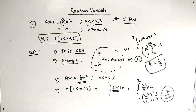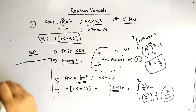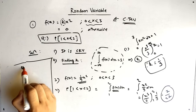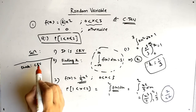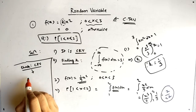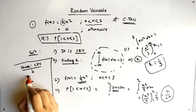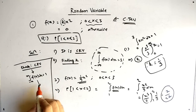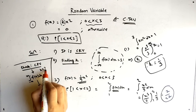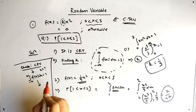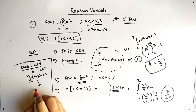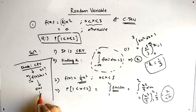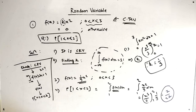After solving this, the answer is 7/27. To summarize the flow: first check whether it is a continuous random variable; if yes, use the integral formula from minus infinity to infinity of f(x) dx equals 1 to find k. Then substitute to get small f(x), then use the given probability range to find the answer.